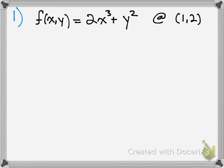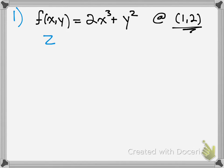So for the first problem, you have your function and you're trying to find a tangent plane at a certain point. First, figure out where this is. Remember, f(x, y) is also like saying z. So we're going to find out what z is. You plug in the point — 1 and 2 — and you get 2 times 1 is 2, plus 2 squared is 4, so you get 6.